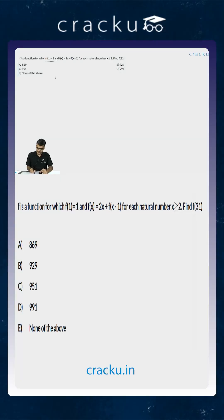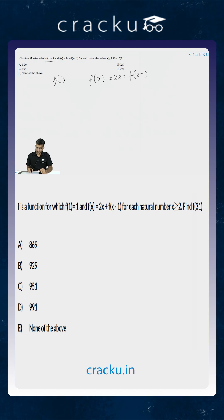We are told that f(1) is equal to 1, and f(x) is equal to 2x plus f(x-1). If f(x) equals 2x plus f(x-1), then the value of f(x) minus f(x-1) is equal to 2x.